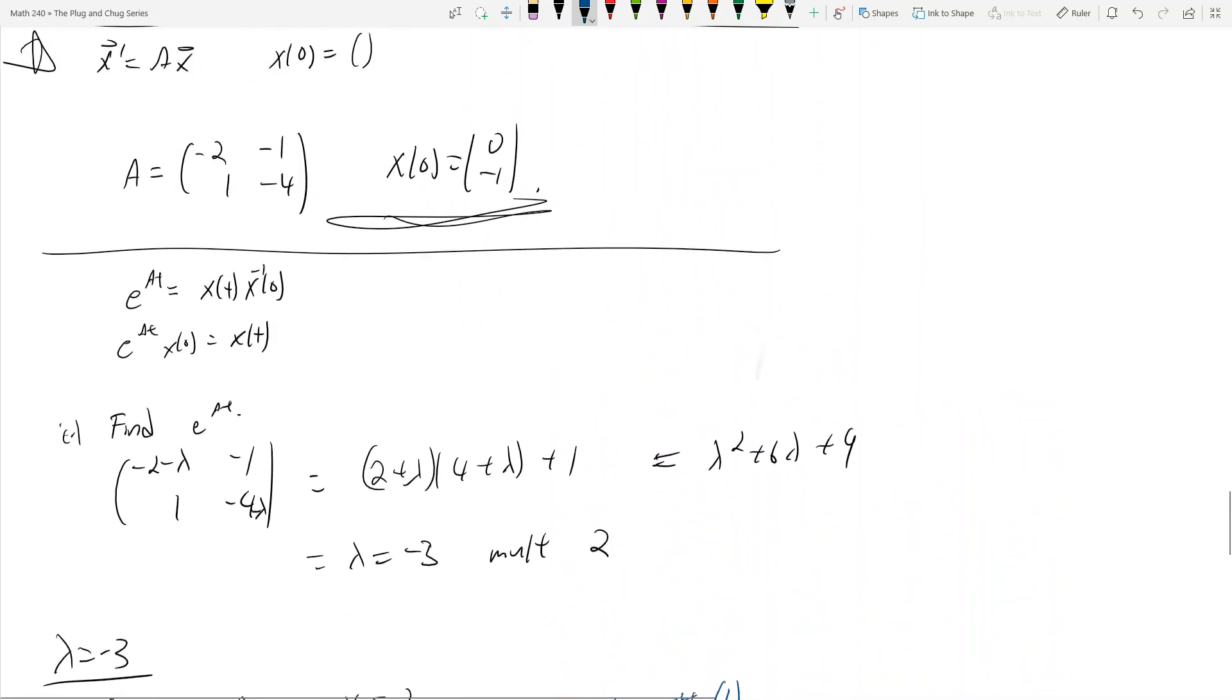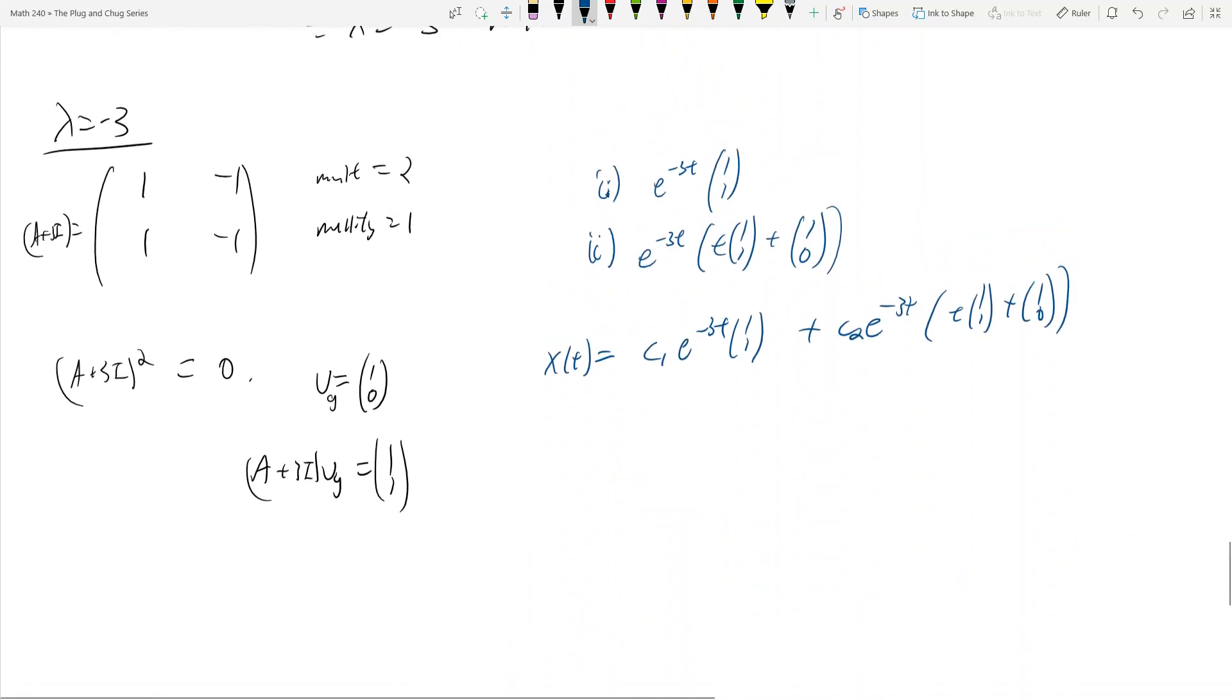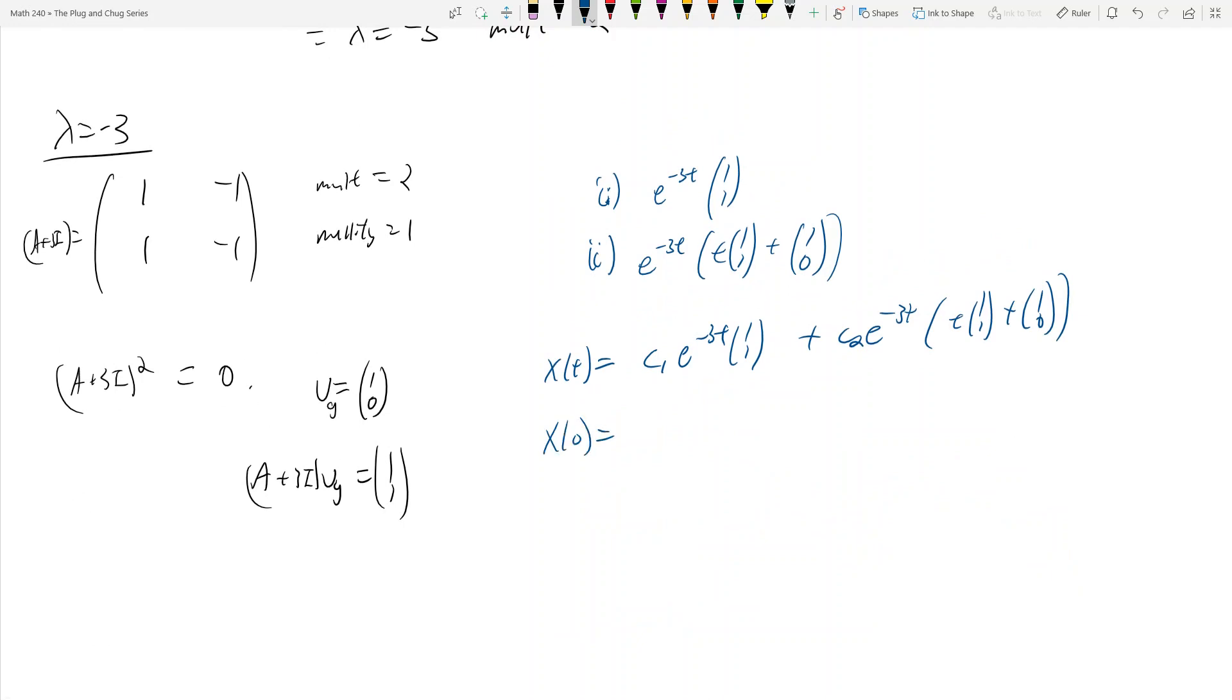So x(0) is equal to, well, that just means this e^(-3t) term goes away, essentially. And then over here, this guy goes away because it's 0 times (1,1). So this becomes c1*(1,1). This becomes e^0, which is 1.